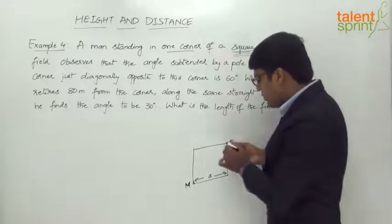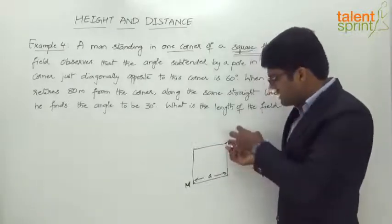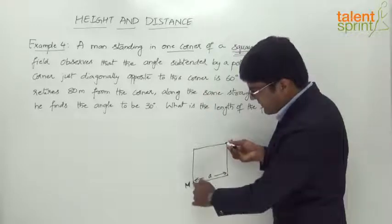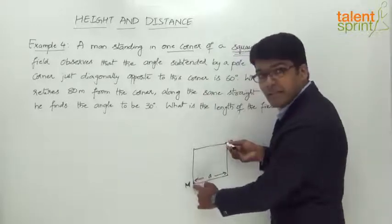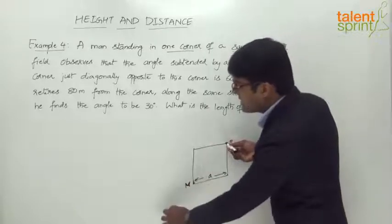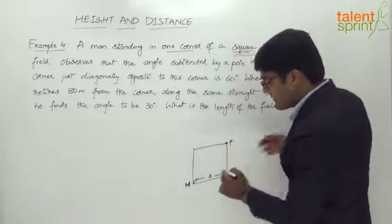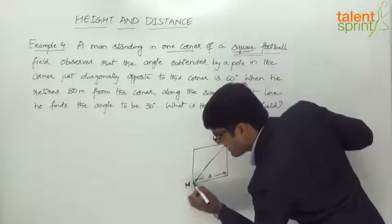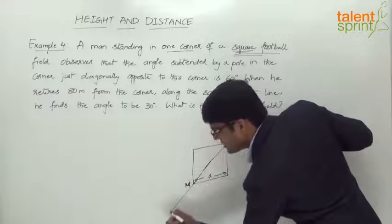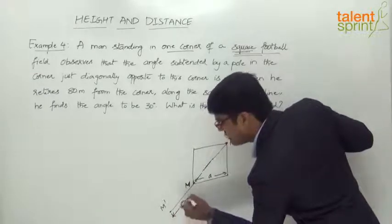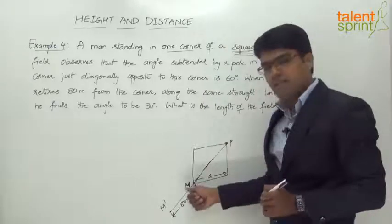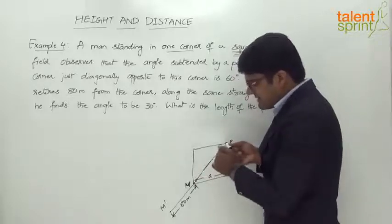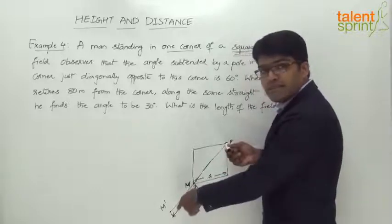There is a pole. If you look at it, the pole would be in this position. If you are looking at the top view of the field — square field and there is a pole — the angle subtended by this pole at this point is 60 degrees. But when the man moves backwards, the angle becomes 30 degrees. This is the diagonal. When he retires 80 meters in the same straight line, this is his initial position M and the new position is M dash. The distance between the two positions is 80 meters. The angle subtended by the pole at M is 60 degrees, but the angle subtended by the pole at M dash is 30 degrees.